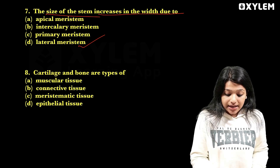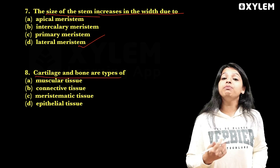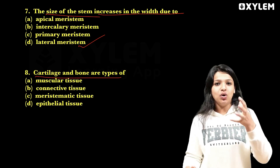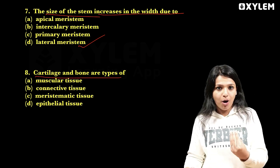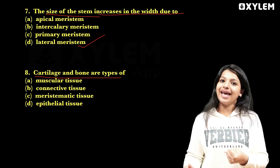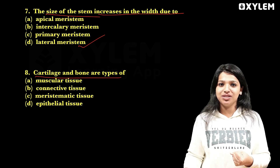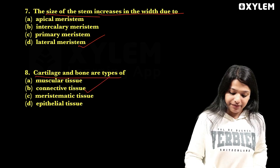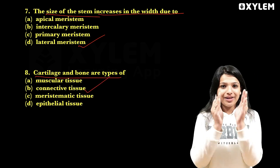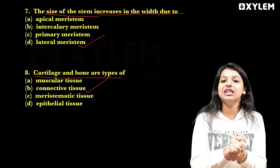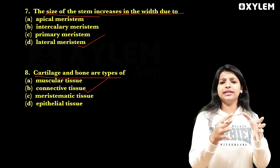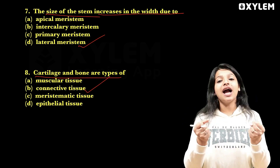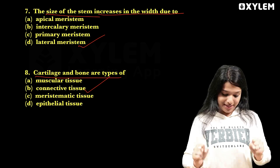Cartilage and bone are types of — we have cartilage, bone, tendon, blood. What type of tissue is this? Yes, connective tissue. That is when it comes to connective tissues — this is bone, that is cartilage.